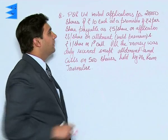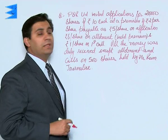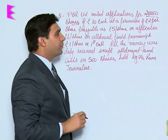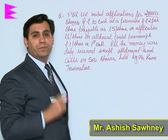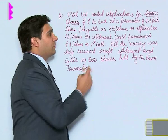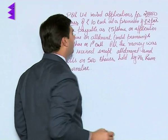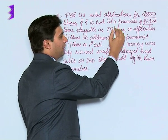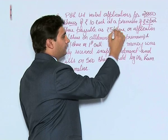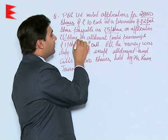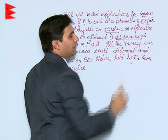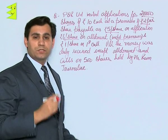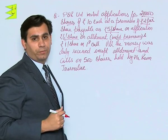In this question, PQR Limited invited applications for 20,000 shares of Rs.10 each at a premium of Rs.2 per share. This is a case of issue of shares at premium. Payable as Rs.5 per share on application and Rs.6 per share on allotment including premium — meaning the premium of Rs.2 per share was payable at the time of allotment.